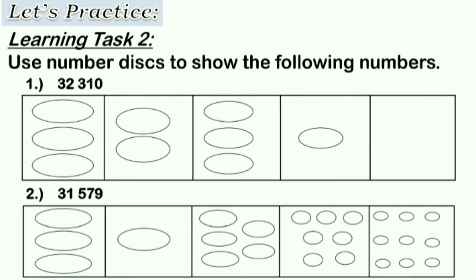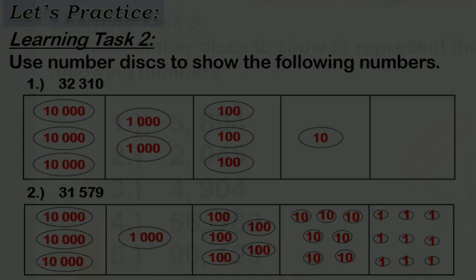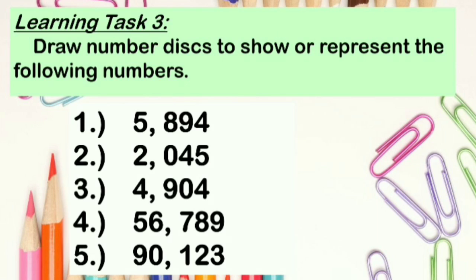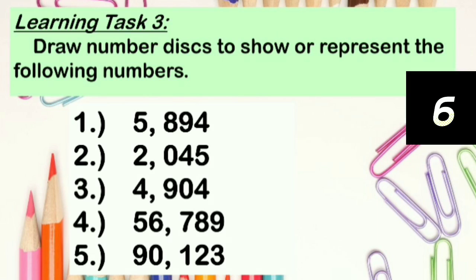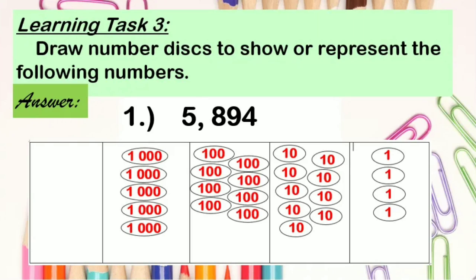Now, let's practice answering learning task 2. Use number discs to show the following numbers. Here is the answer for number 1. We have here 5 thousands, 8 hundreds, 9 tens, and 4 ones. Now, you do and check the remaining numbers.